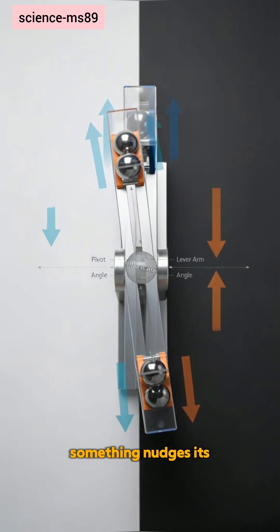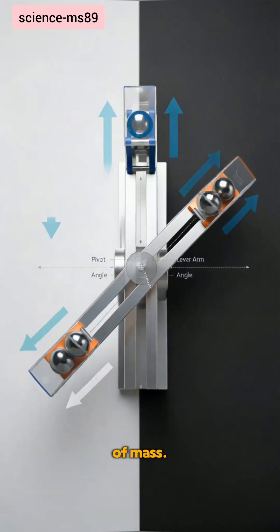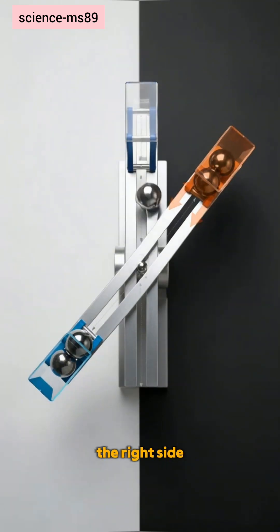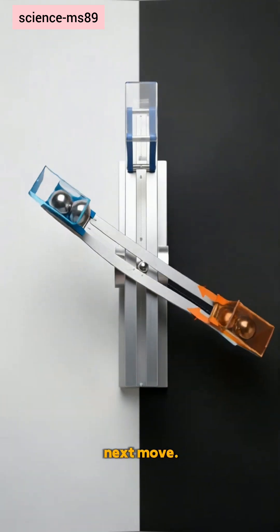Until something nudges its center of mass. A ball shifts left, adding weight and lever arm. Torque tips left. The right side rises, primed for the next move.